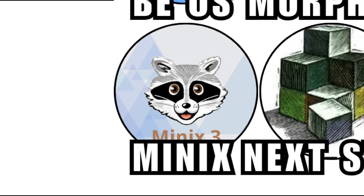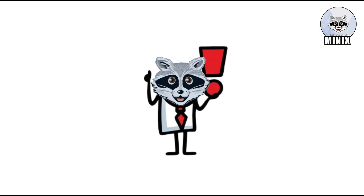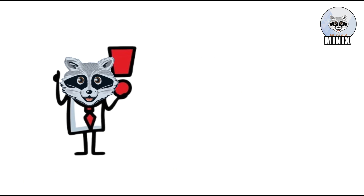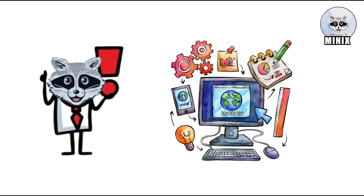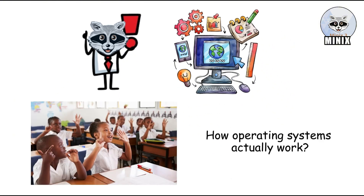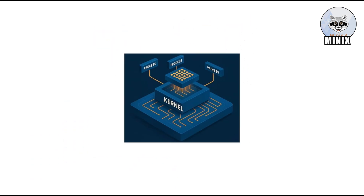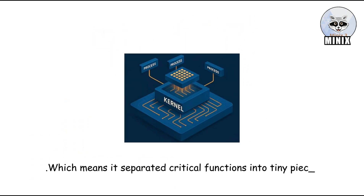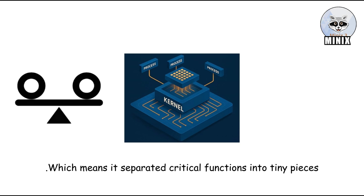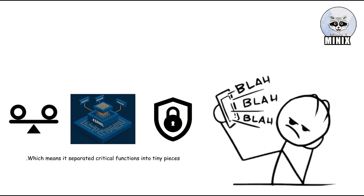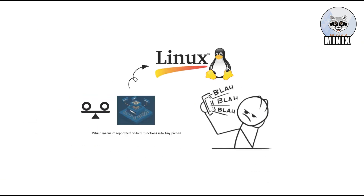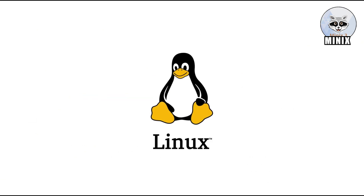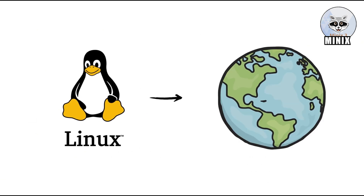Minix is one of the most influential operating systems in history that almost nobody outside of computer science has heard of. It was created as a learning tool to teach students how operating systems actually work. It used a microkernel design, which means it separated critical functions into tiny pieces for better stability and security. Sounds boring — until you realize this is what directly inspired Linux. Yes, the most powerful open-source OS on Earth started as a reaction to Minix.